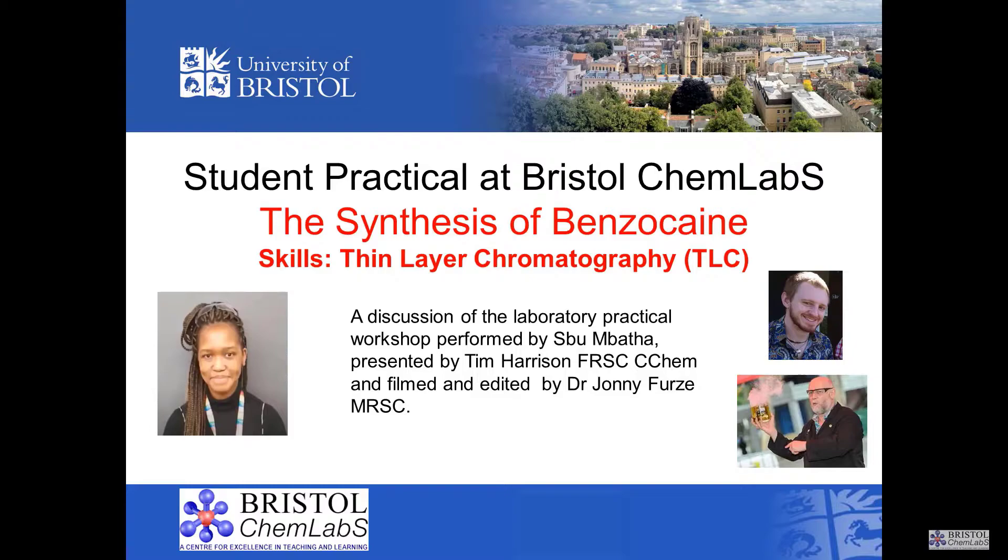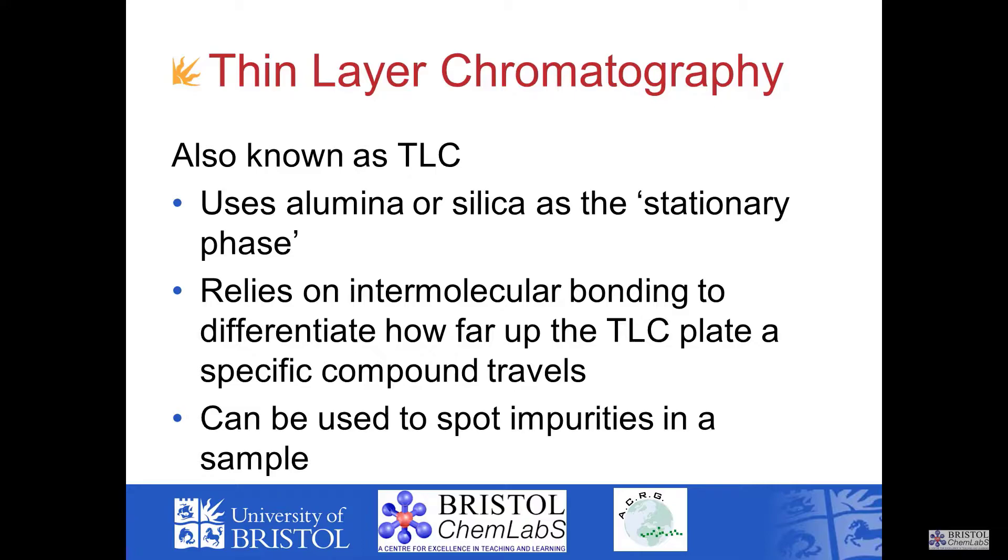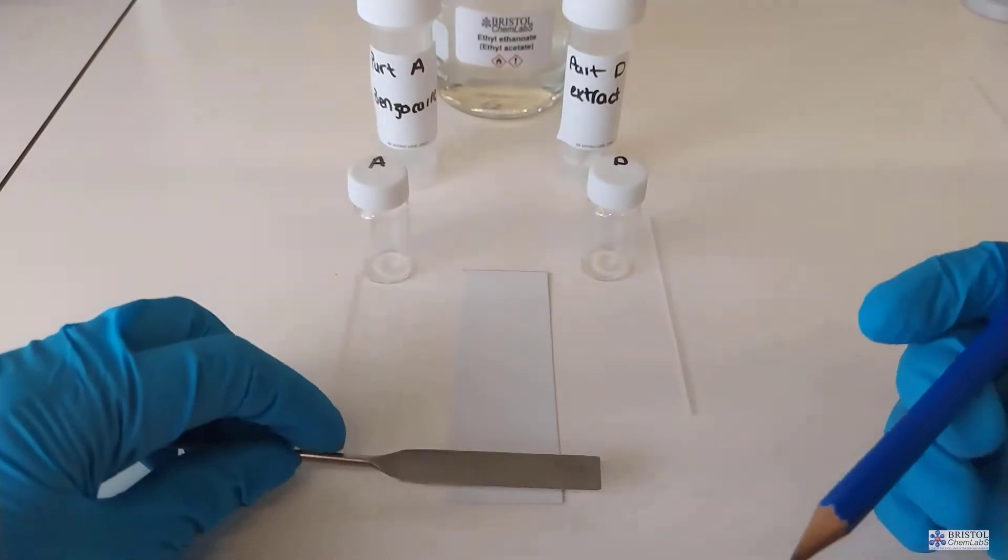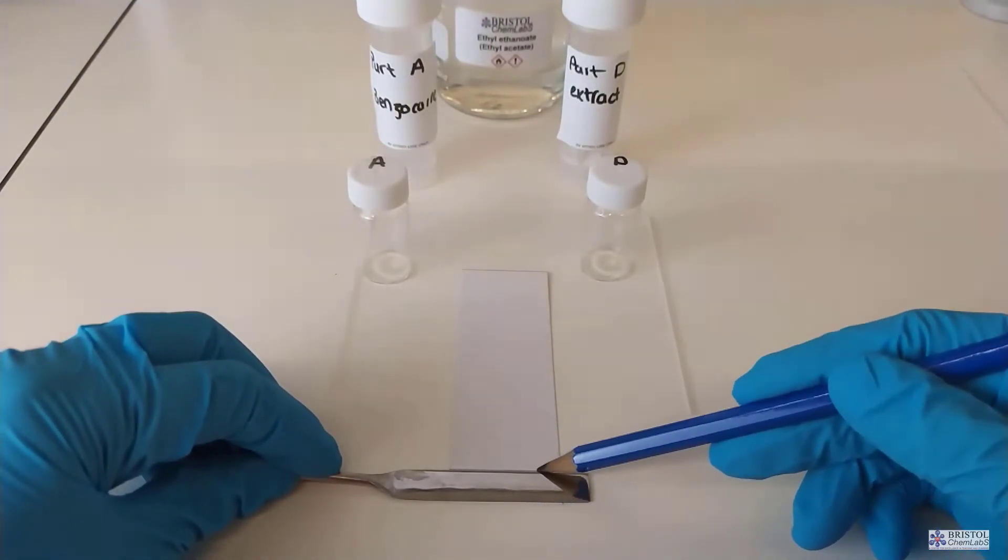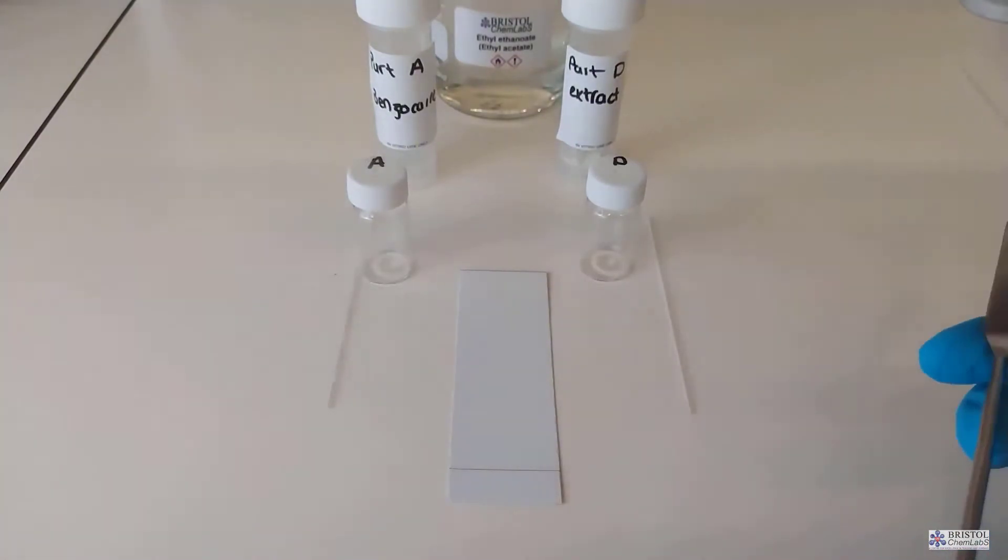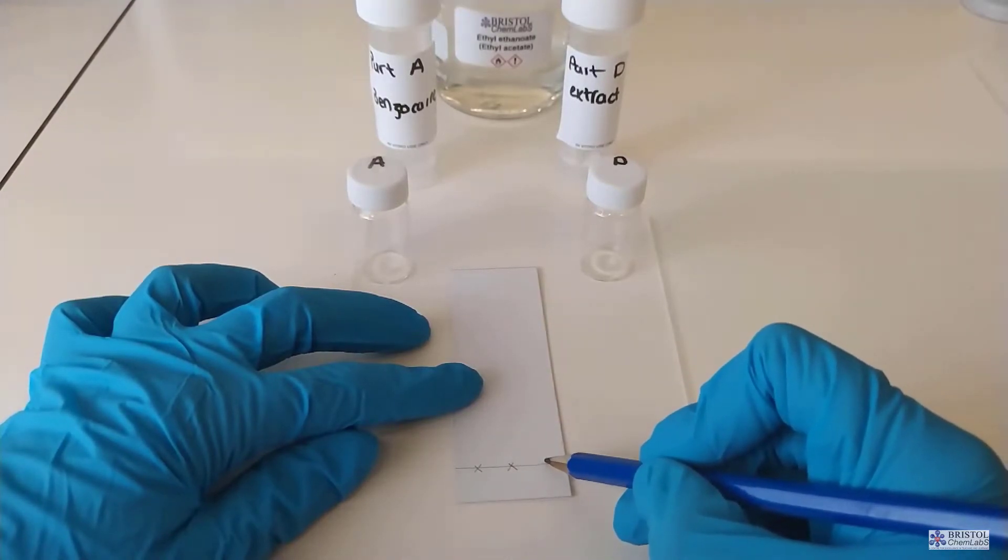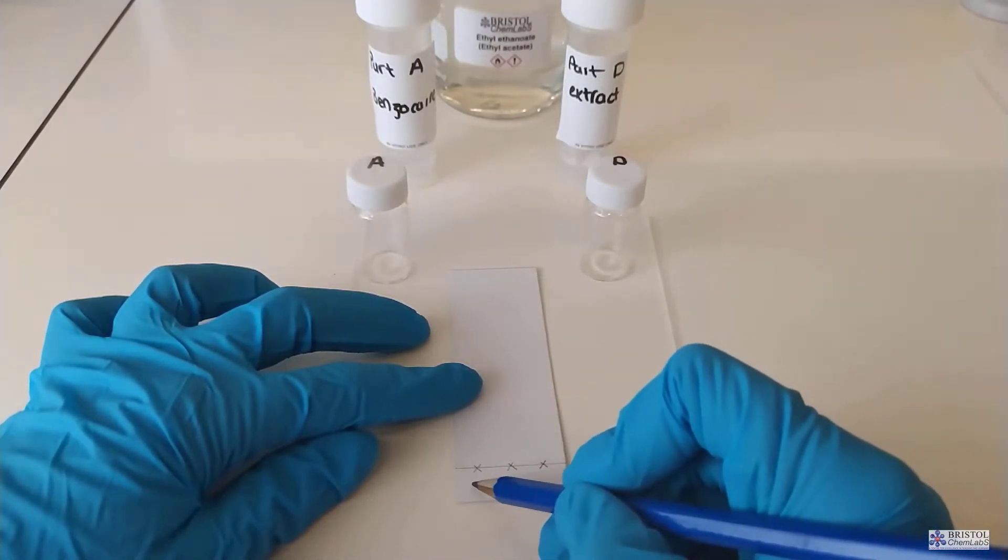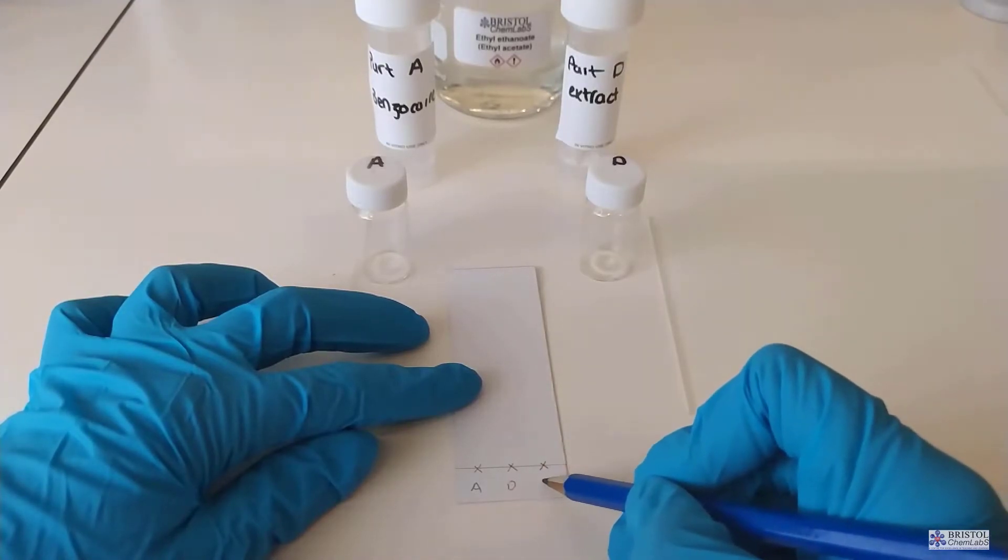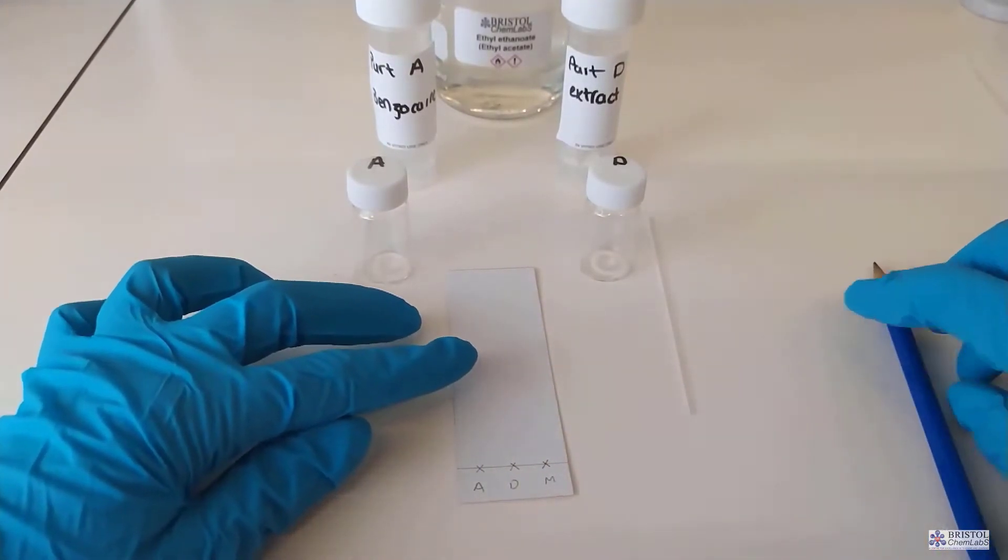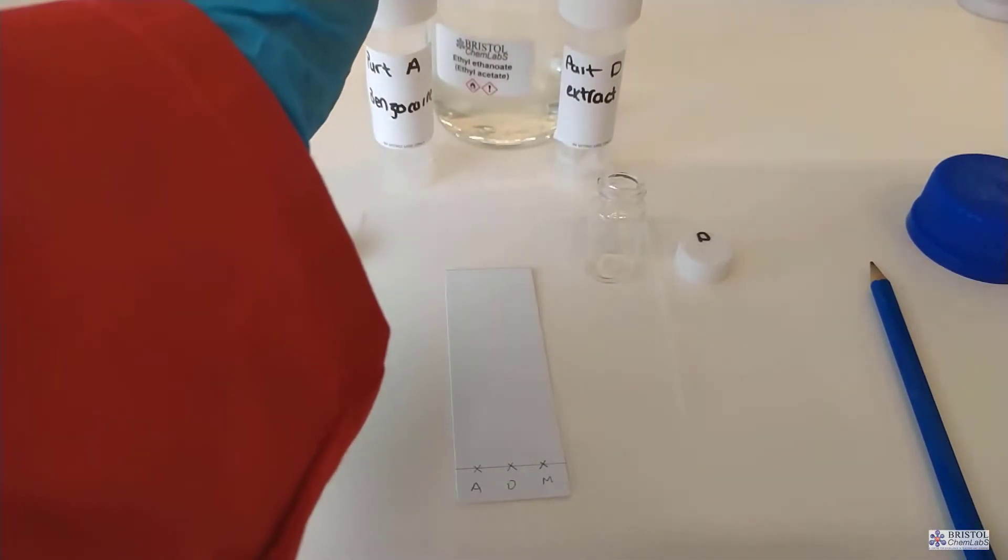One way of looking at the purity of the product formed in this synthesis is to use thin layer chromatography which gets abbreviated to TLC. The TLC plate that is used contains alumina that has been treated with a fluoresce. The alumina itself is stuck either on the back of a plastic or aluminum support material. When handling a TLC plate it's best to hold it by its edges so you don't transfer any contaminants to the face. To mark up a TLC plate pencil not ink pen must be used.